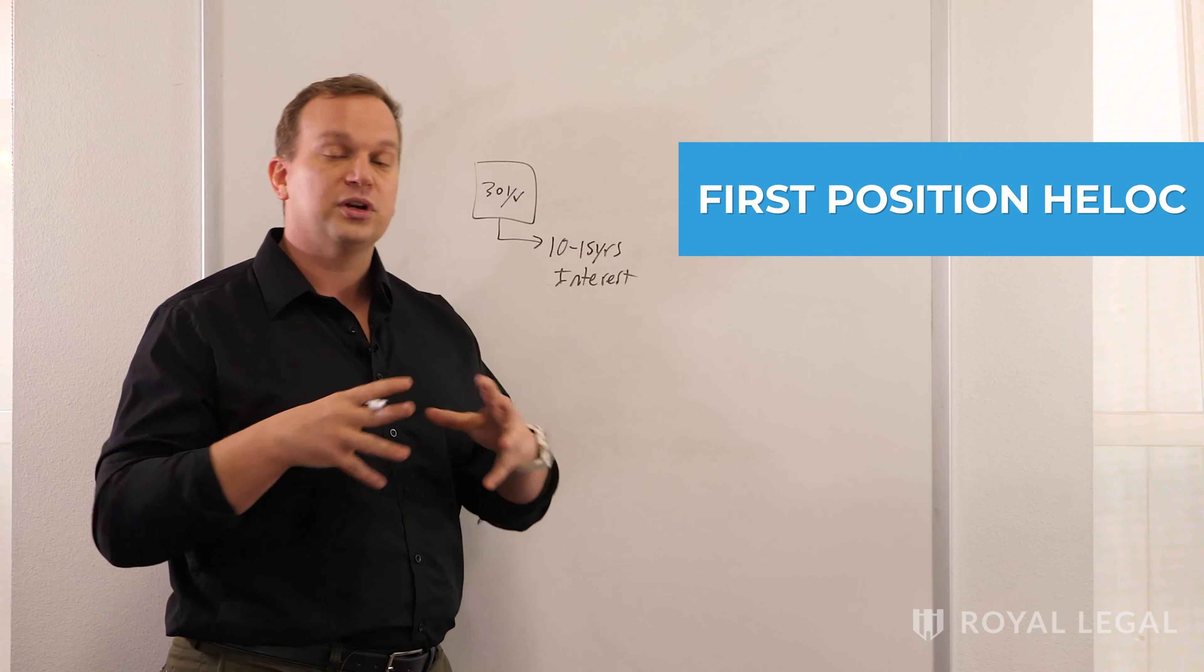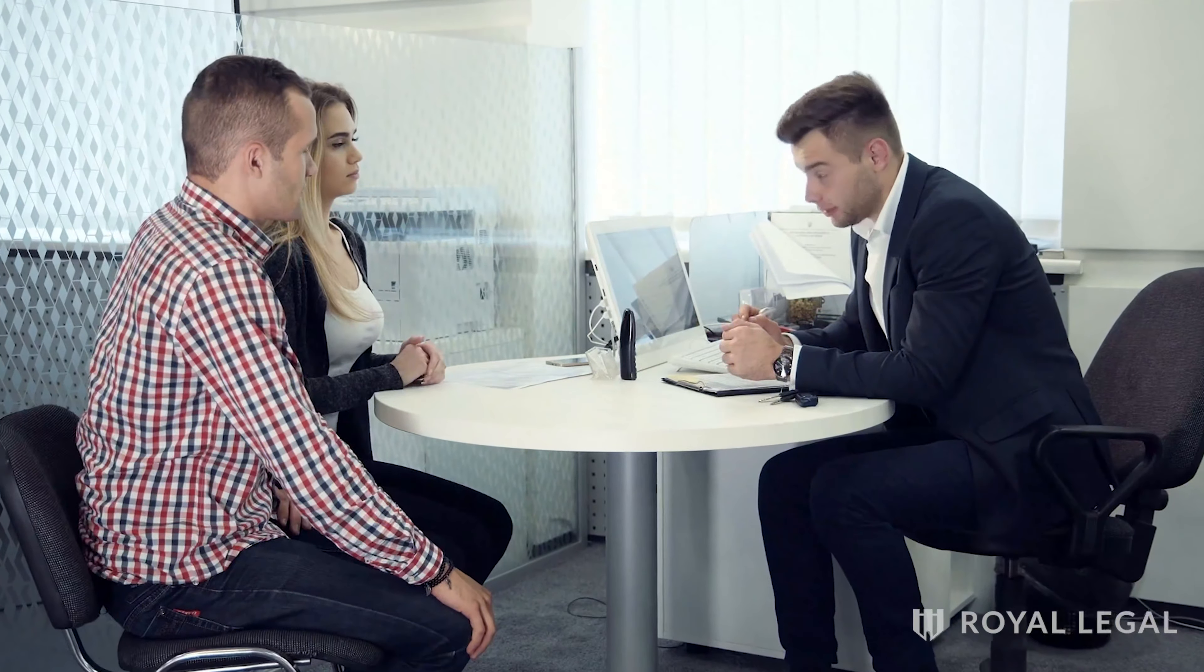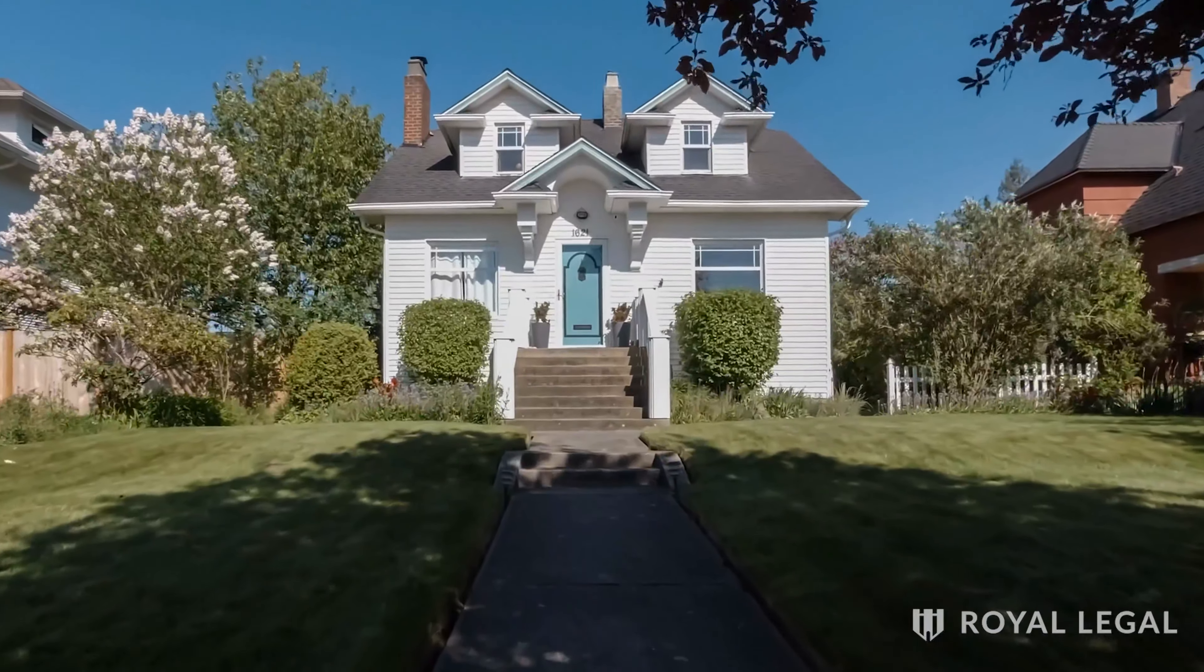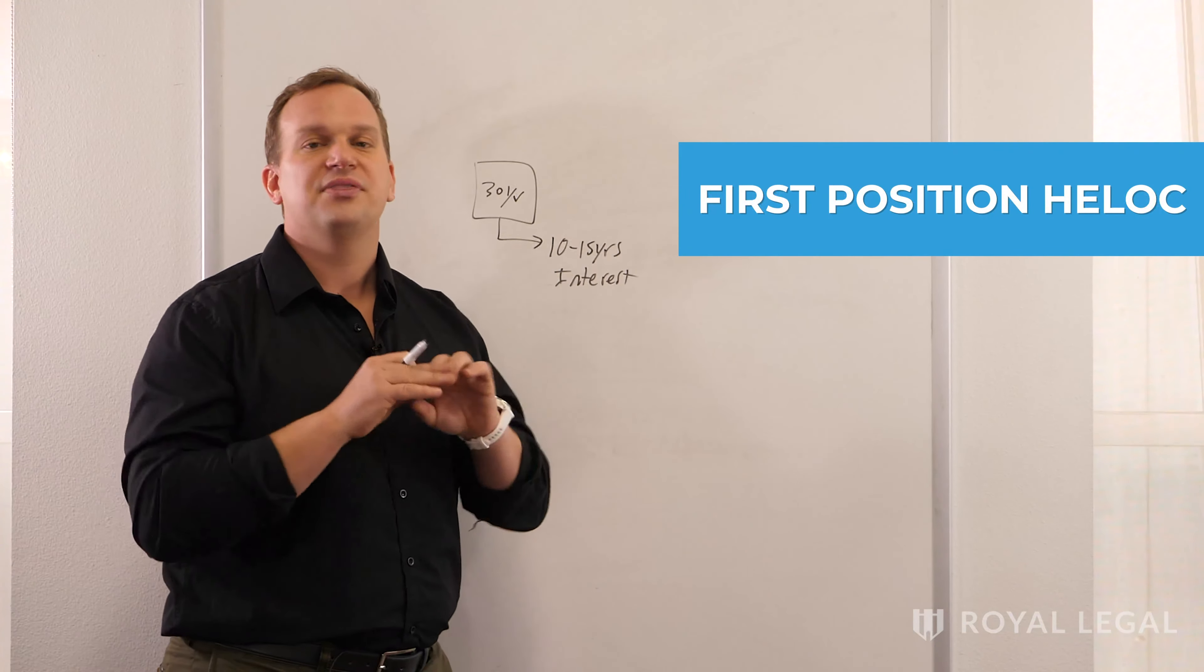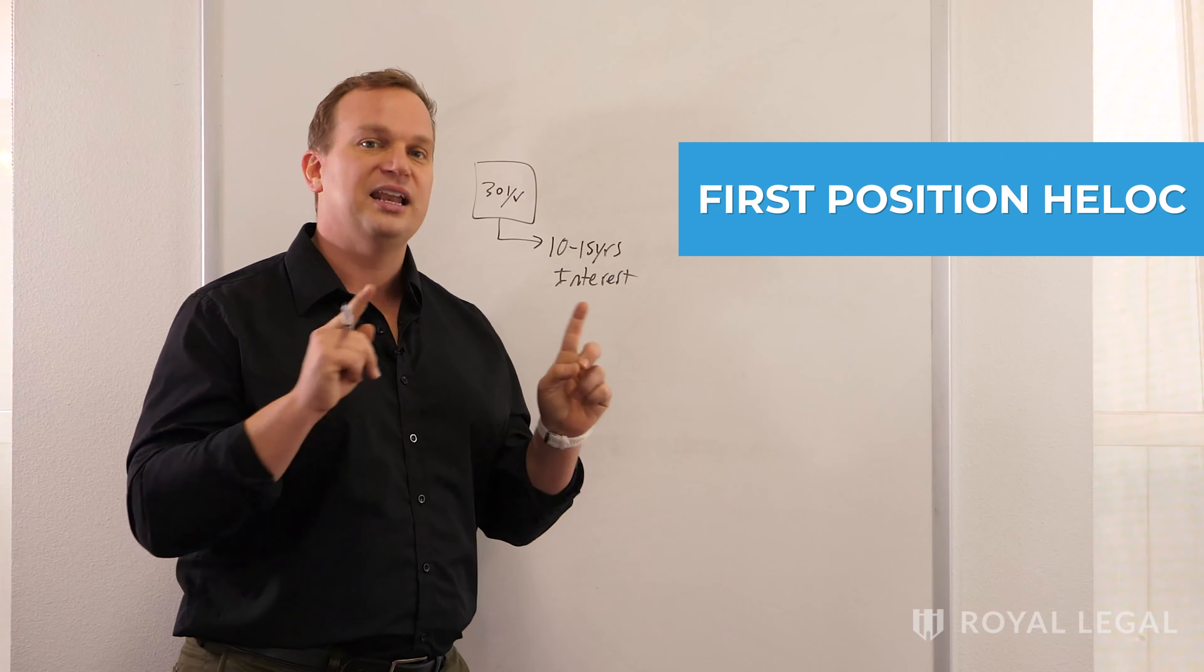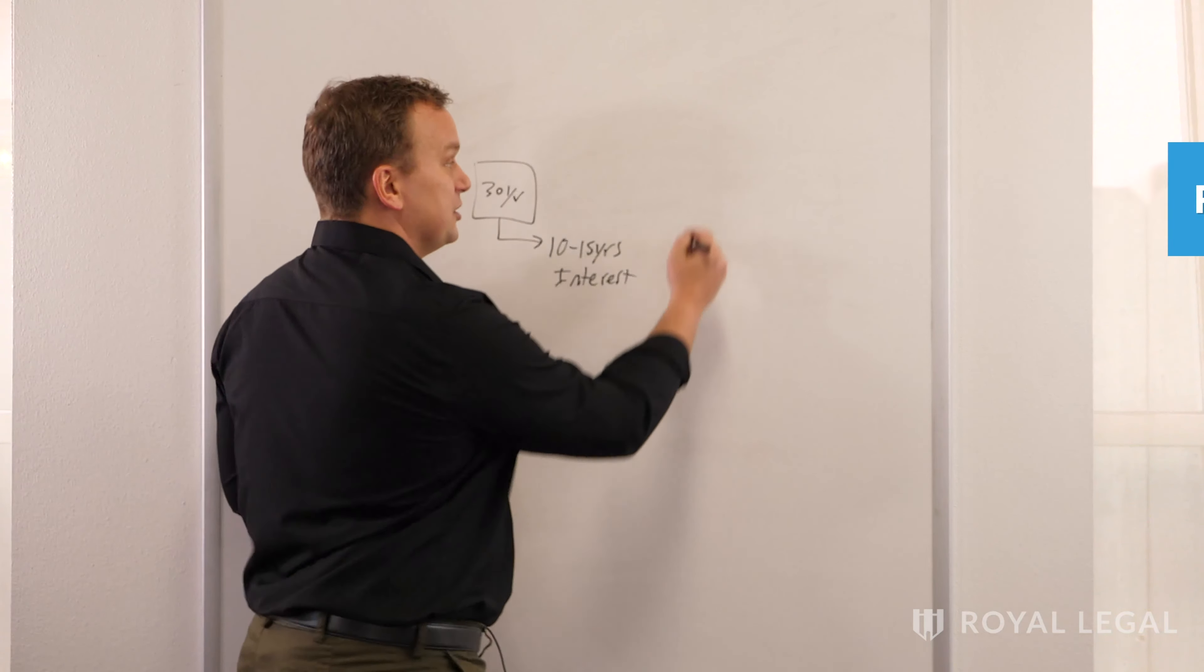First position means it's your primary mortgage. This is the financing vehicle that you would use to purchase a piece of property and it gets you up to 90% of your loan to value. So if you have 10% down, this is how you can pay off your primary residence in three to seven years just by changing one thing, using the first position HELOC instead of a conventional mortgage. Let me show you exactly how this works.